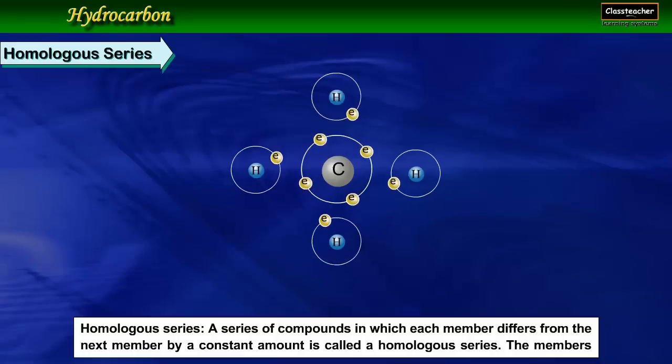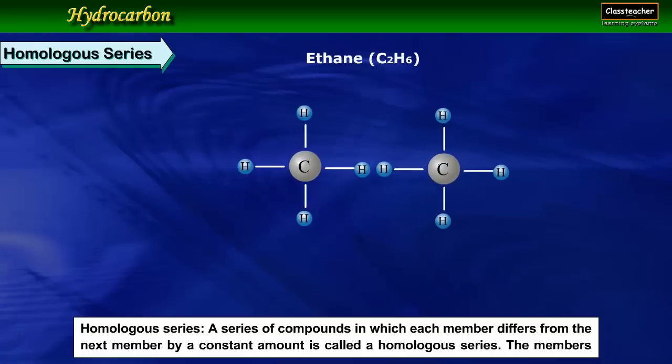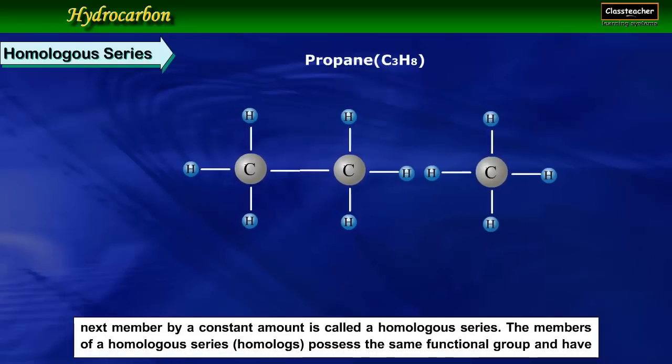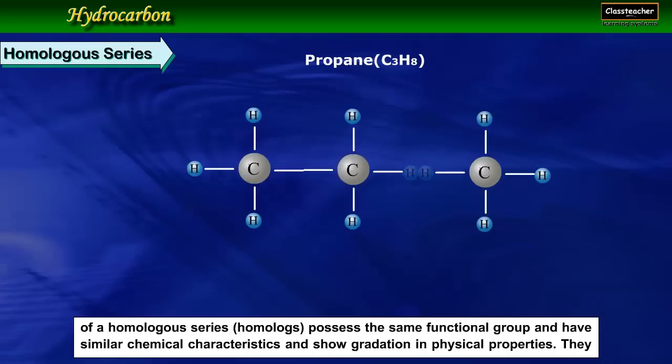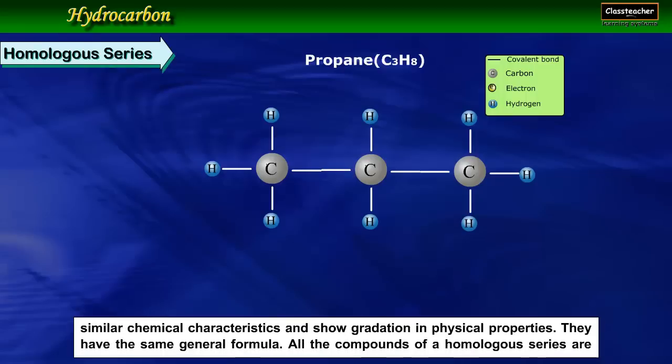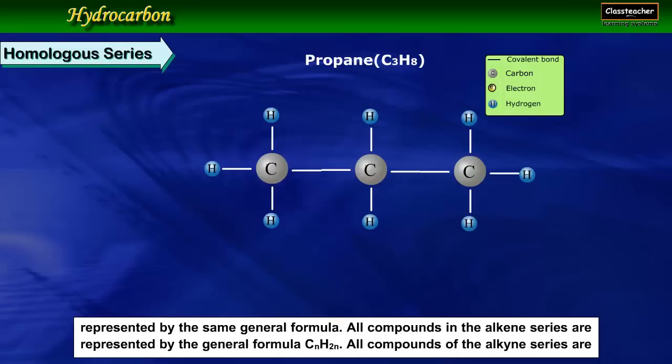Homologous series. A series of compounds in which each member differs from the next member by a constant amount is called a homologous series. The members of a homologous series possess the same functional group and have similar chemical characteristics and show gradation in physical properties. They have the same general formula. All the compounds of a homologous series are represented by the same general formula. All compounds in the alkene series are represented by the same general formula.